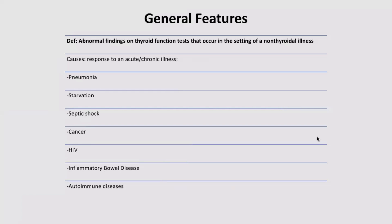Now the general features of Euthyroid Sick Syndrome: there is abnormal thyroid hormone synthesis in non-thyroid illness. There is no endogenous thyroid disease, but thyroid functions are impaired due to non-thyroidal illness. Common causes include acute or chronic illness, pneumonia, starvation, septic shock, various types of metastatic and localized cancers.